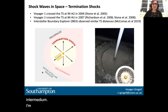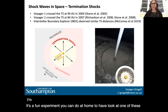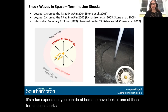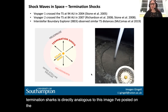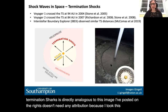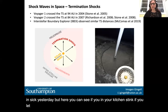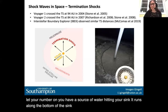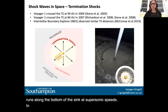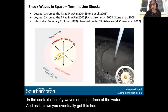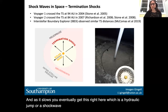It's a fun experiment you can do at home to see one of these termination shocks — directly analogous to water running in a kitchen sink. If you let your tap run, you have a source of water hitting your sink; it runs along the bottom at supersonic speeds in the context of gravity waves on the surface of the water. As it slows, you enter a shock wave — a termination shock — behind which the water is slowed and becomes turbulent with disordered fluctuations. That's what's happening in the sun as well.